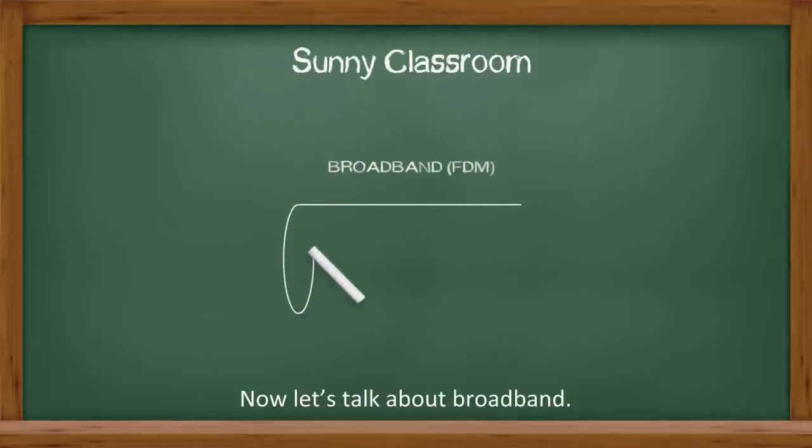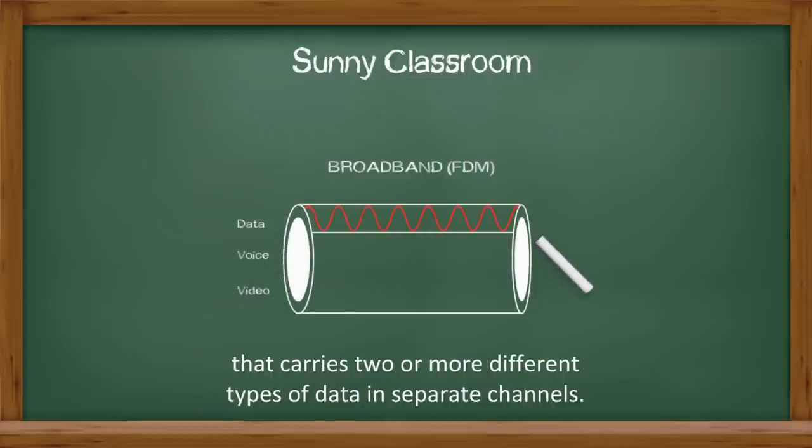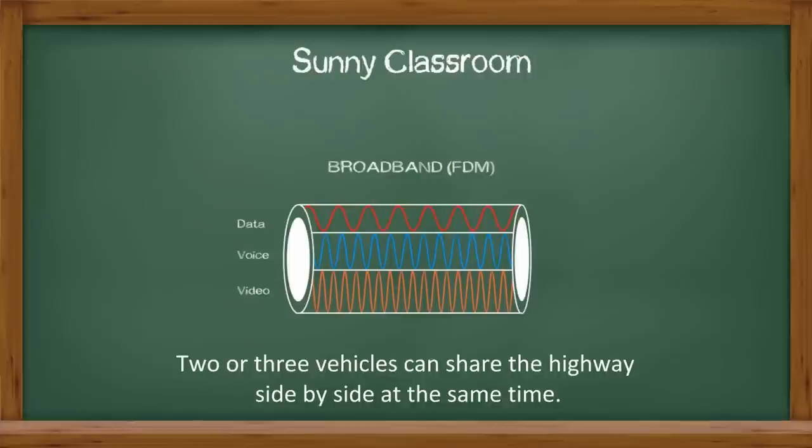Now let's talk about broadband. The term broadband technically refers to any type of signal transmission technique that carries two or more different types of data in separate channels. Broadband signals can share one media. It is like a multi-lane highway. Two or three vehicles can share the highway side by side at the same time.